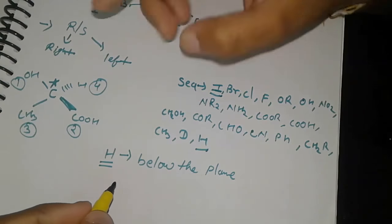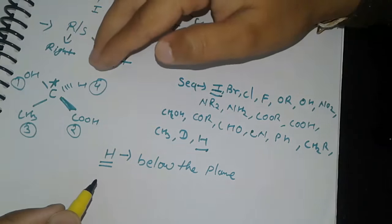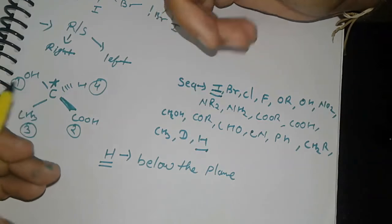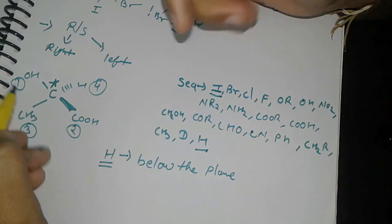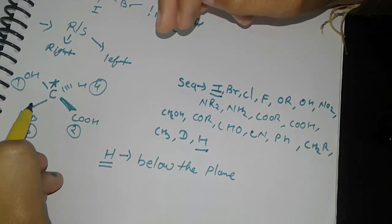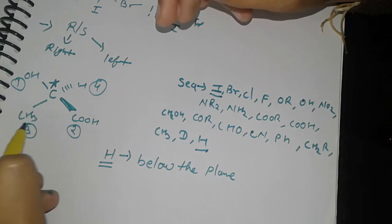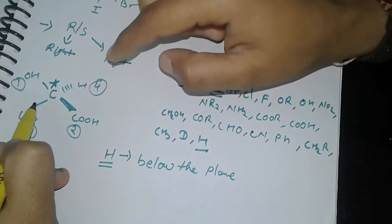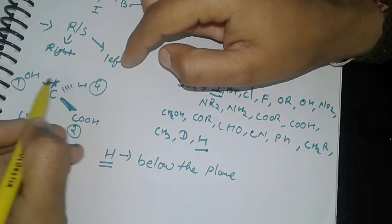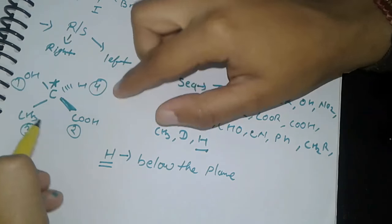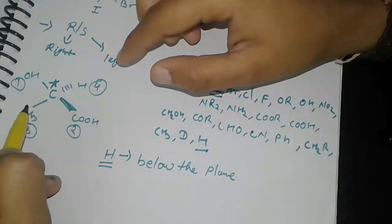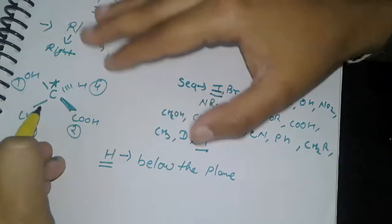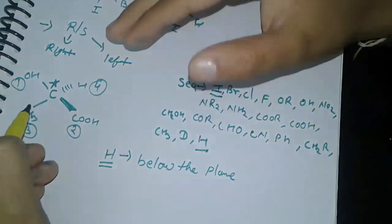And if your hydrogen is not below the plane but in some other position, you have to interconvert. For interconversion, if you need two changes to get hydrogen below the plane, you don't need to change the configuration. Whatever rotation you get is the configuration.